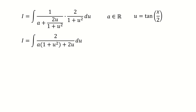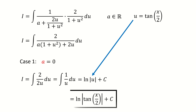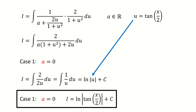Next, we need to discuss the value of a. For case 1, this is the simple case where a equals 0. The integral simplifies and after canceling the factor of 2, we get the integral of 1 over u, giving the result natural log of u plus C. Replacing u with tangent of half x gives us the answer for case 1 when a equals 0. So far this integral is simple — it's a sheep.